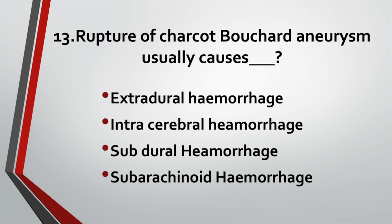Rupture of Charcot-Bouchard aneurysm usually causes: Option A: Extradural hemorrhage. Option B: Intracerebral hemorrhage. Option C: Subdural hemorrhage. Option D: Subarachnoid hemorrhage. Answer: Option B, Intracerebral hemorrhage.